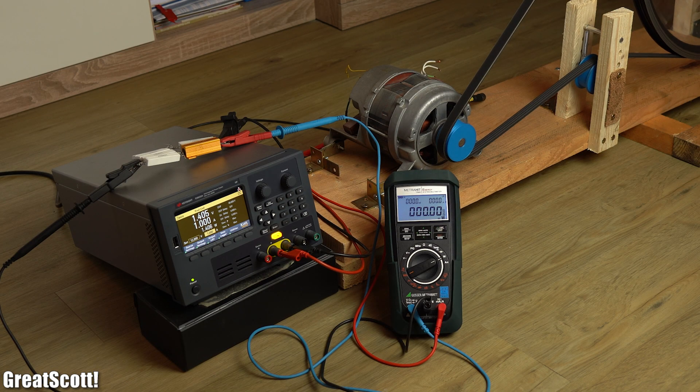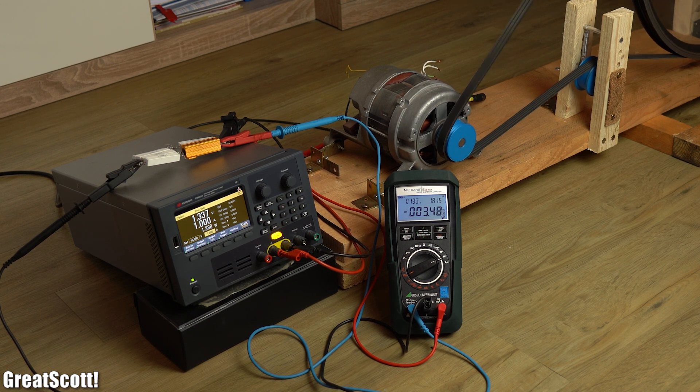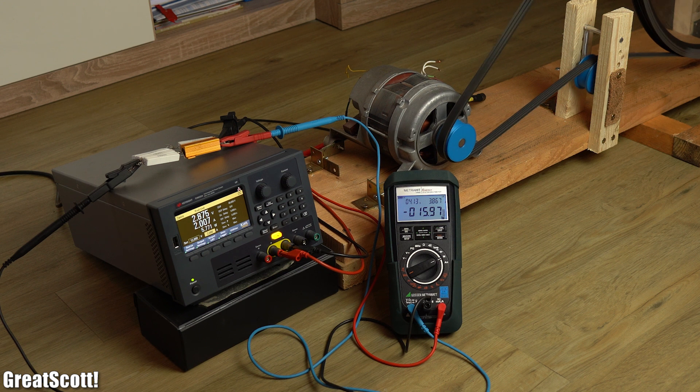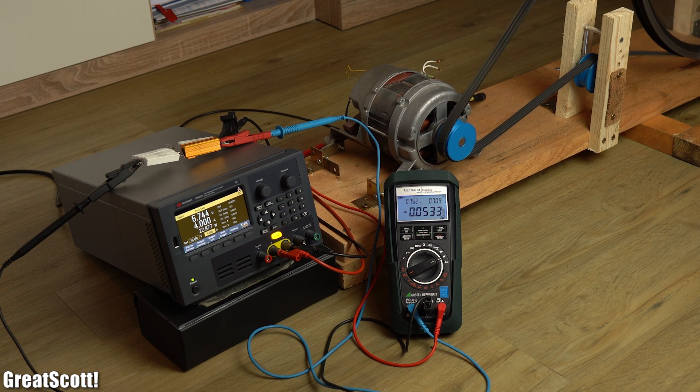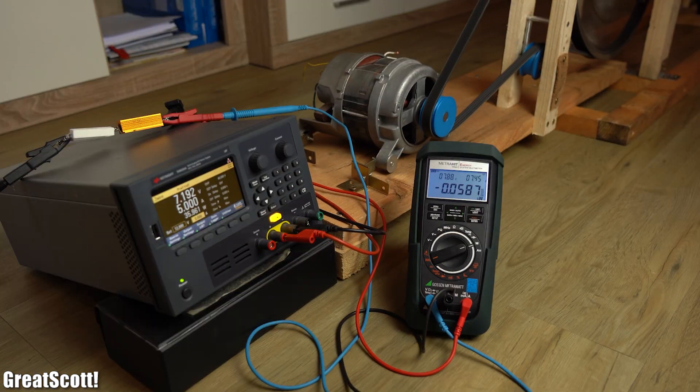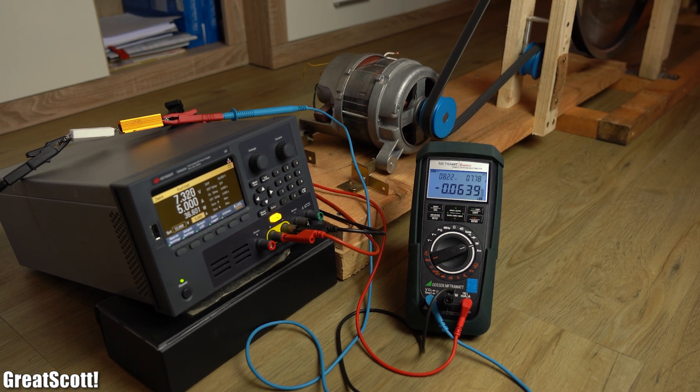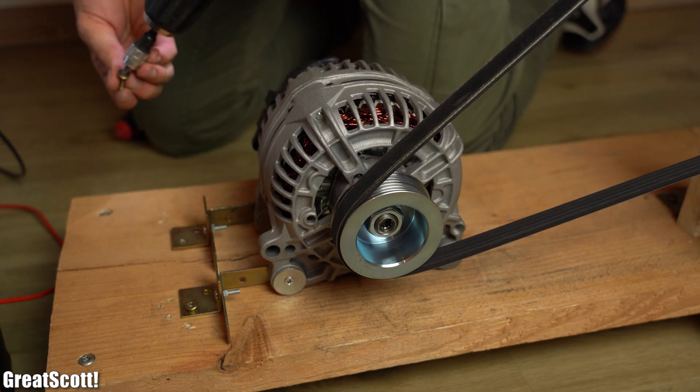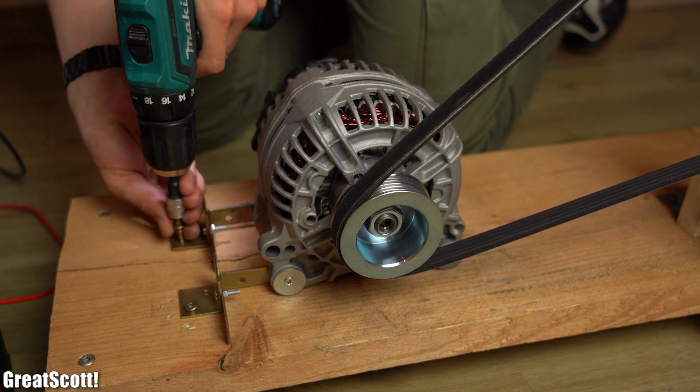Now at an exciter current of 1A I produced around 3.5W of power, at 2A 15W, at 3A 33W, at 4A 55W, and at 5A 75W, at which point it was also impossible to reach a decent speed anymore. So it seems like my original alternator was the best solution for my bike generator system.